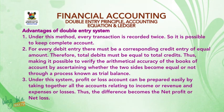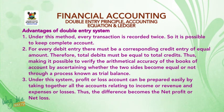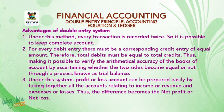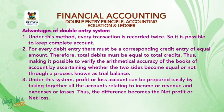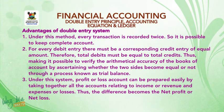Advantages of double entry system. Number one, under this system every transaction is recorded twice, so it is possible to keep complete accounts. Number two, for every debit entry there must be a corresponding credit entry of equal amount. Therefore, total debit must equal total credit, making it possible to verify the arithmetical accuracy of the books of accounts through a process known as trial balance.